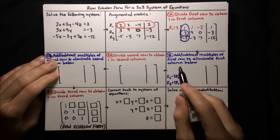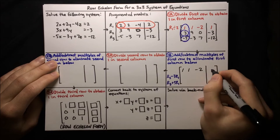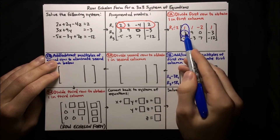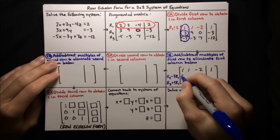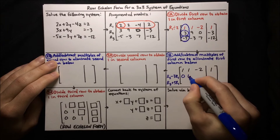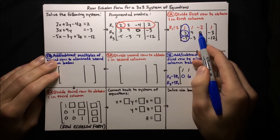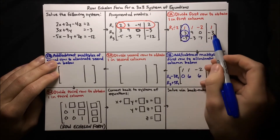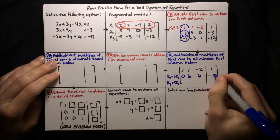Let's write our matrix now. The first row stays the same: 1, 1, negative 2, and 1. For the second row, we're subtracting 3 times the first row. So 3 minus 3 times 1 is 0. Then 9 minus 3 times 2 is 0 minus negative 6, so that's 6. And then negative 3 minus 3 times 1 is negative 3 minus 3, so negative 6.